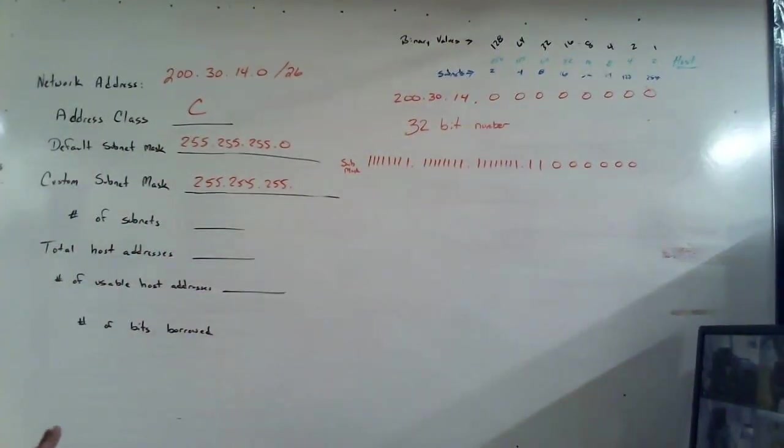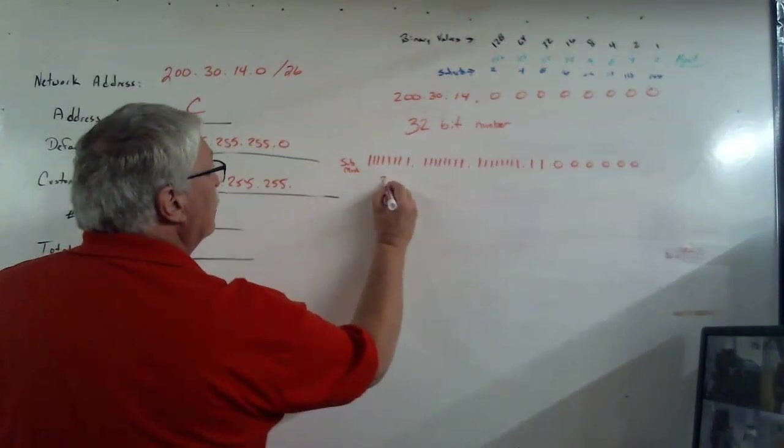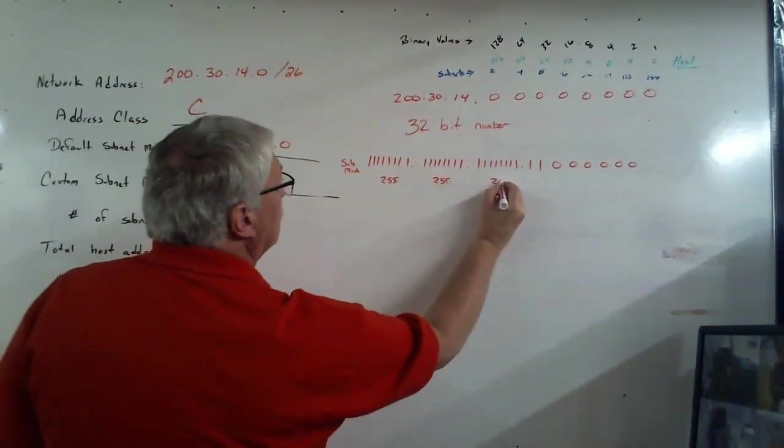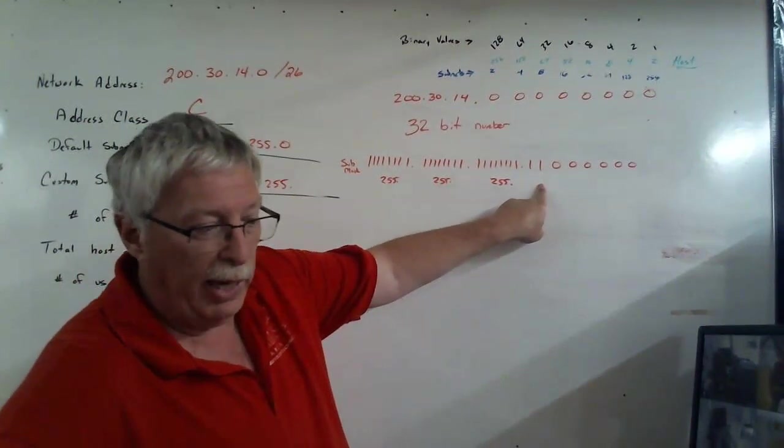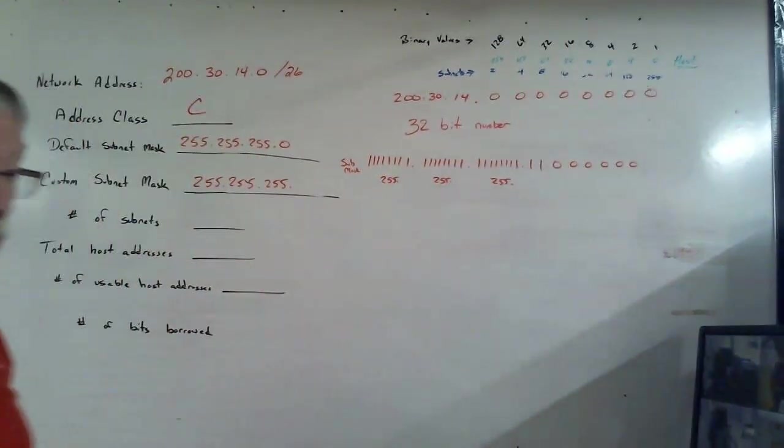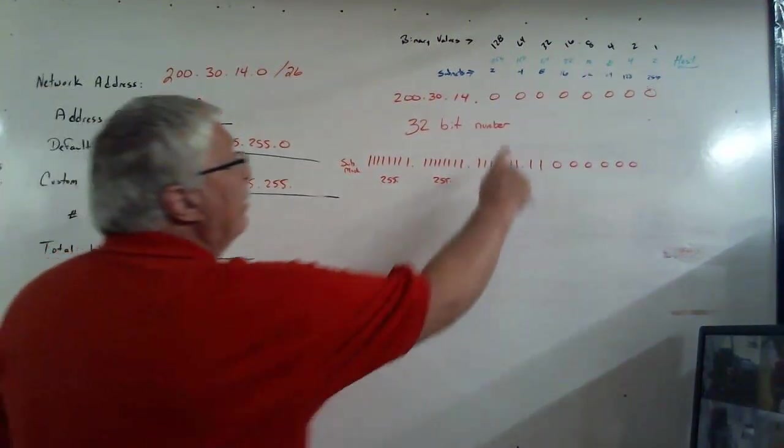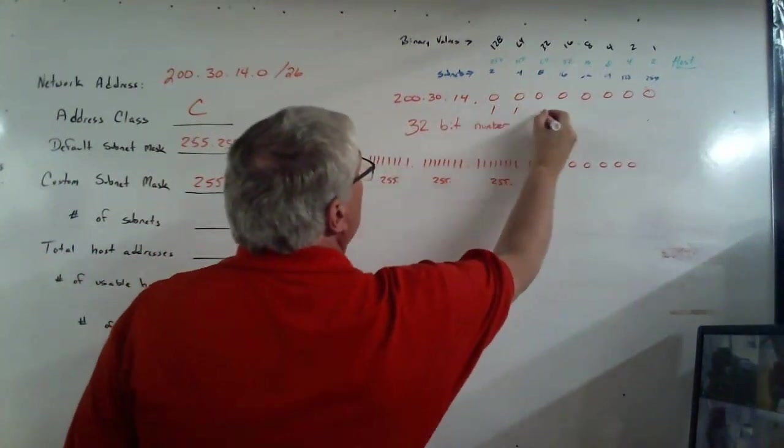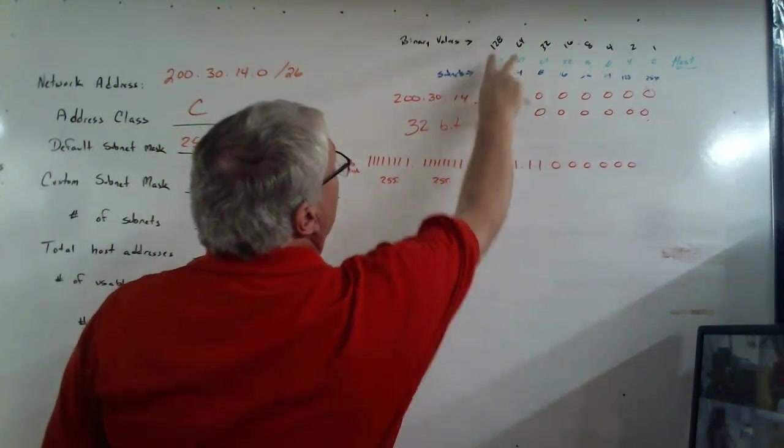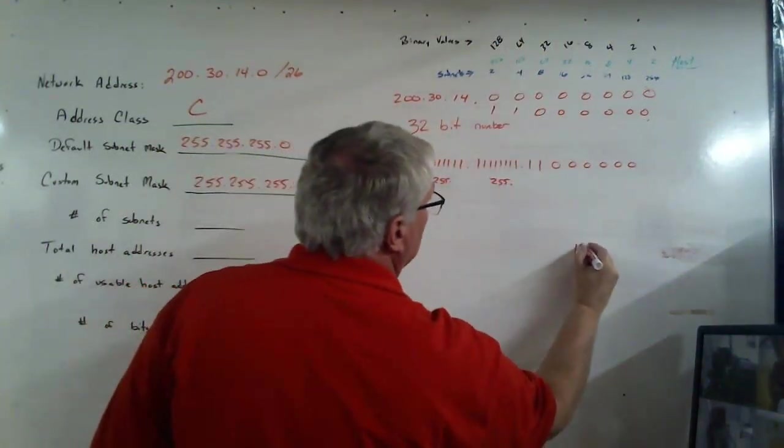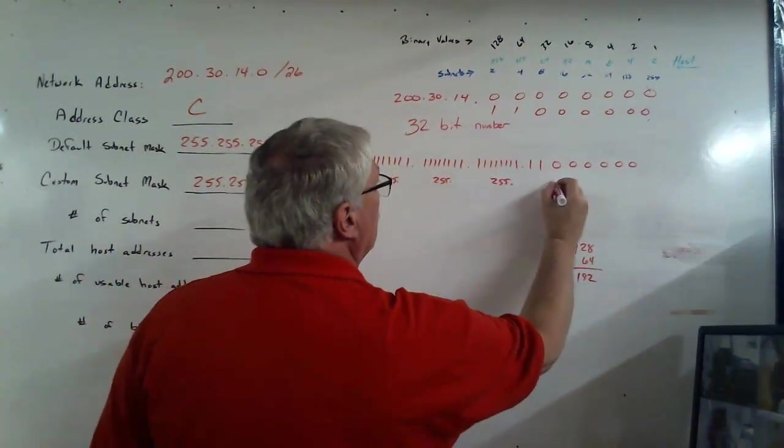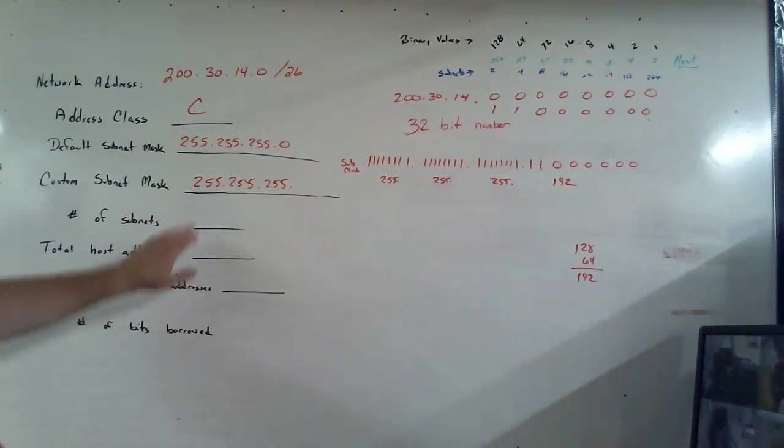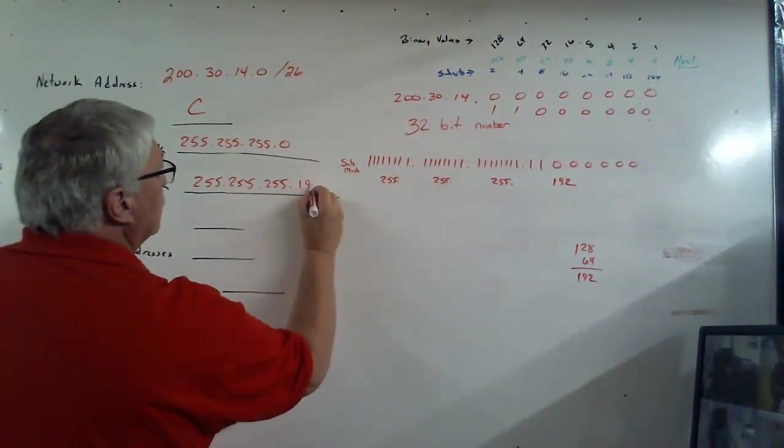We already said just a moment ago that 8 ones, the highest you can have in any of those numbers, is 255. Guess what? There's my triple 255. I only have to convert this last binary number, two ones and 6 zeros, into a decimal number. So, if I apply that up here as two ones and my 6 zeros, I know I have to add 128 and 64 together to get a total of 192.